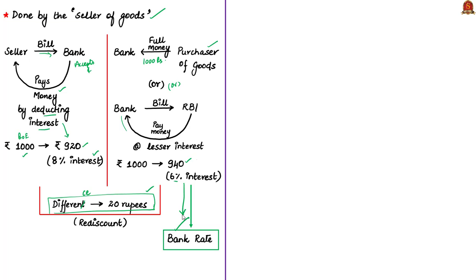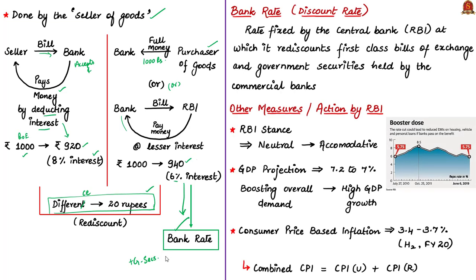Apart from bills of exchange, commercial banks can also get their government securities discounted from the Reserve Bank of India. So we can define the bank rate as the rate fixed by the central bank at which it re-discounts the first-class bills of exchange and also the government securities held by the commercial banks. This bank rate can also be called the discount rate.